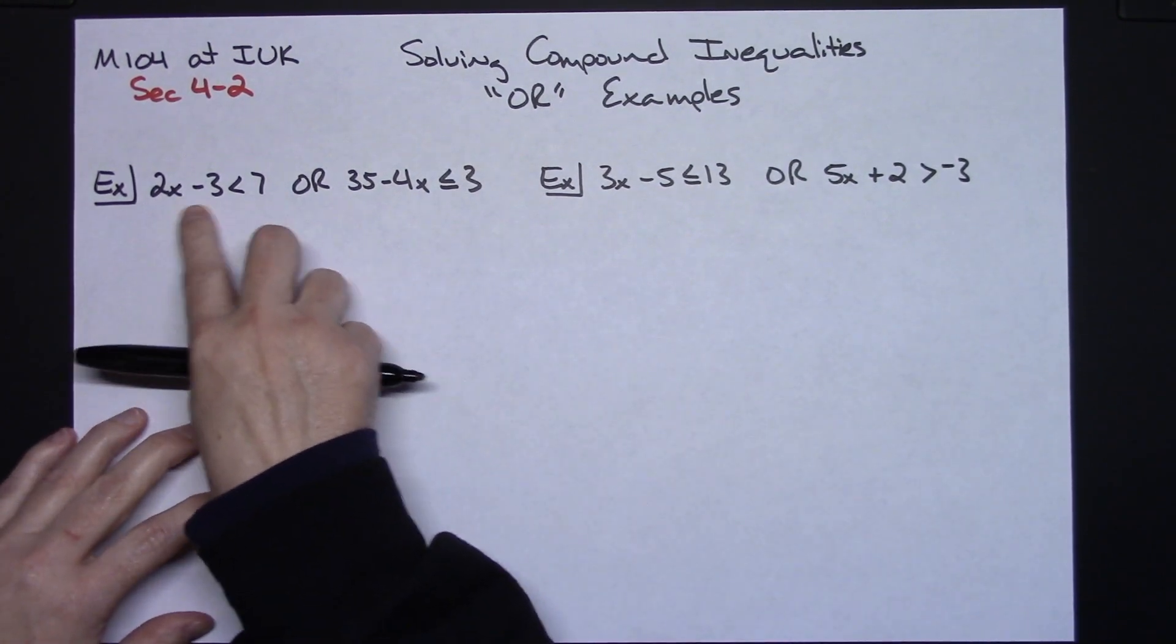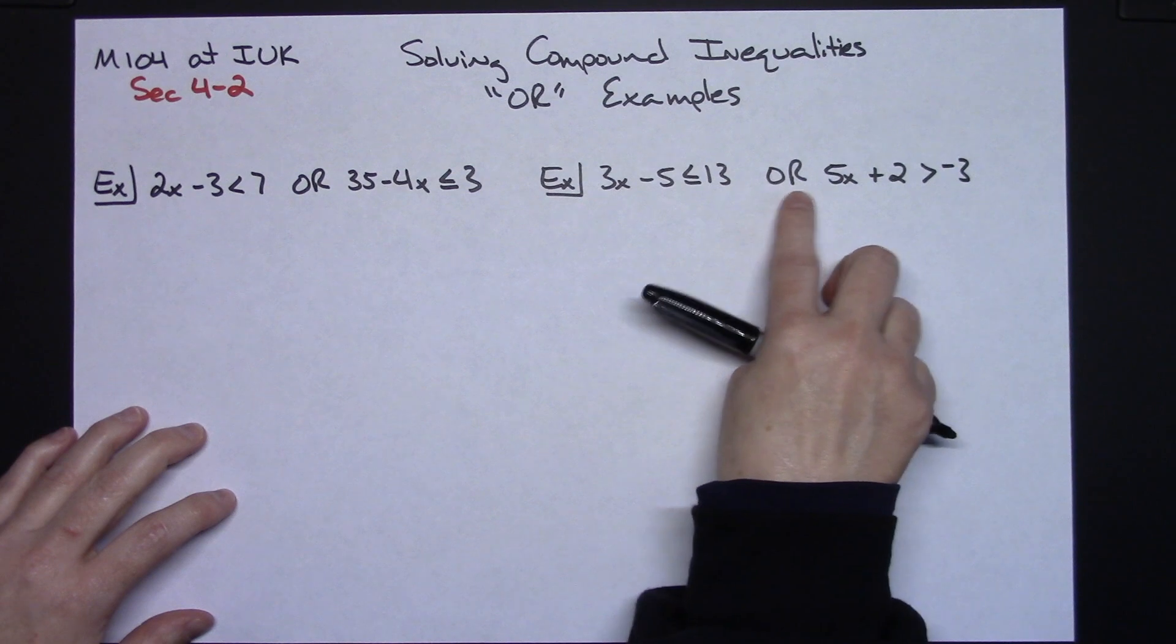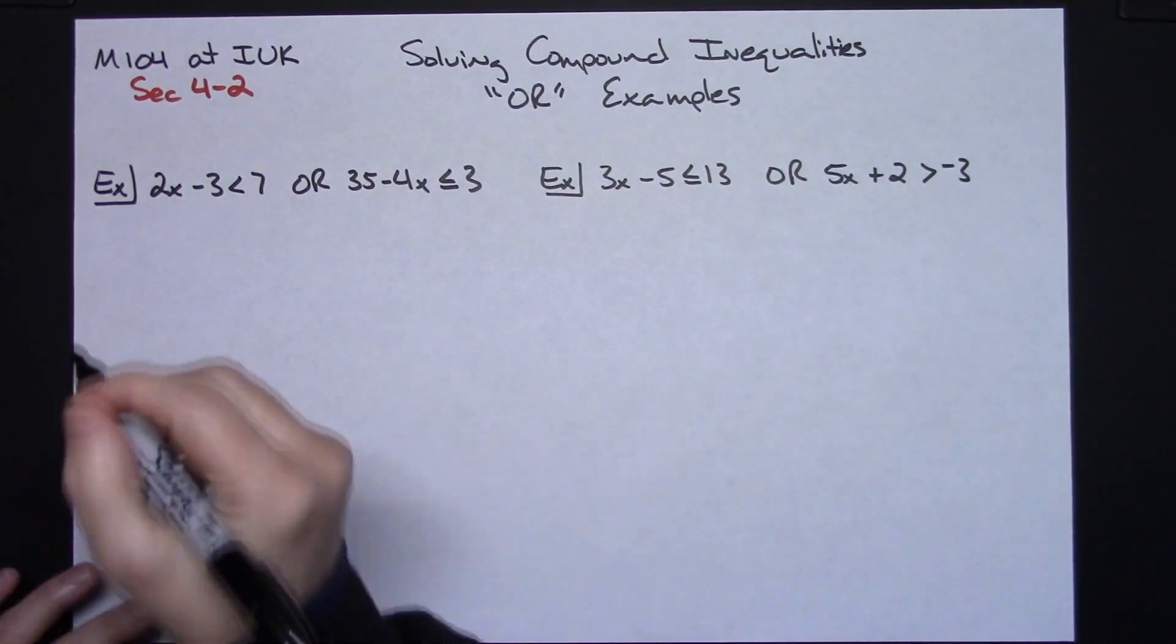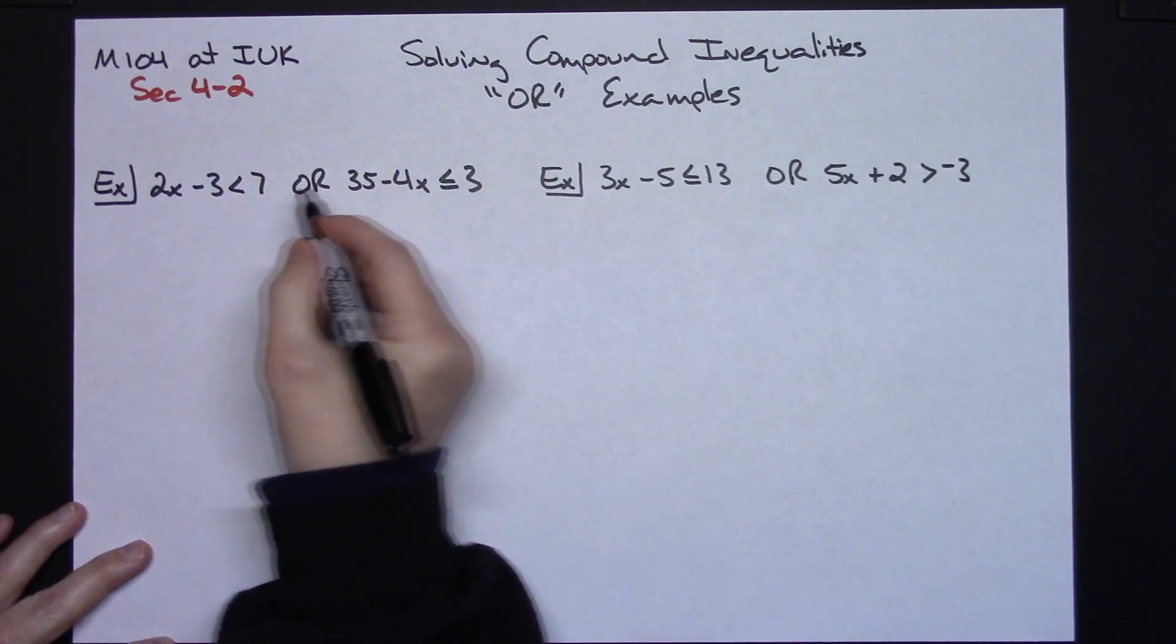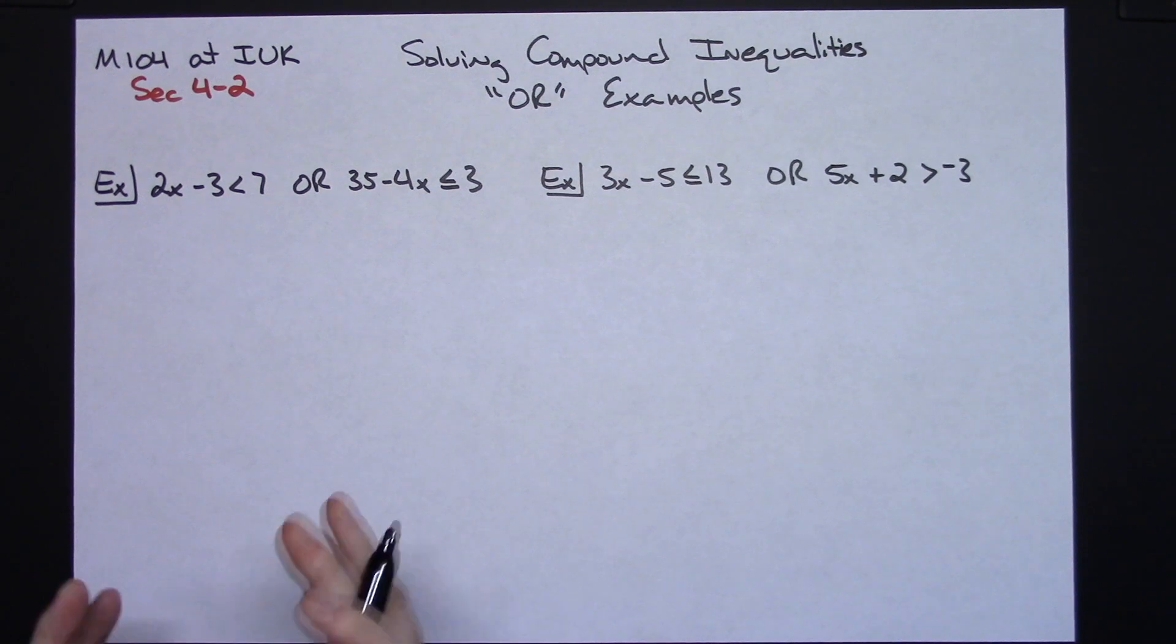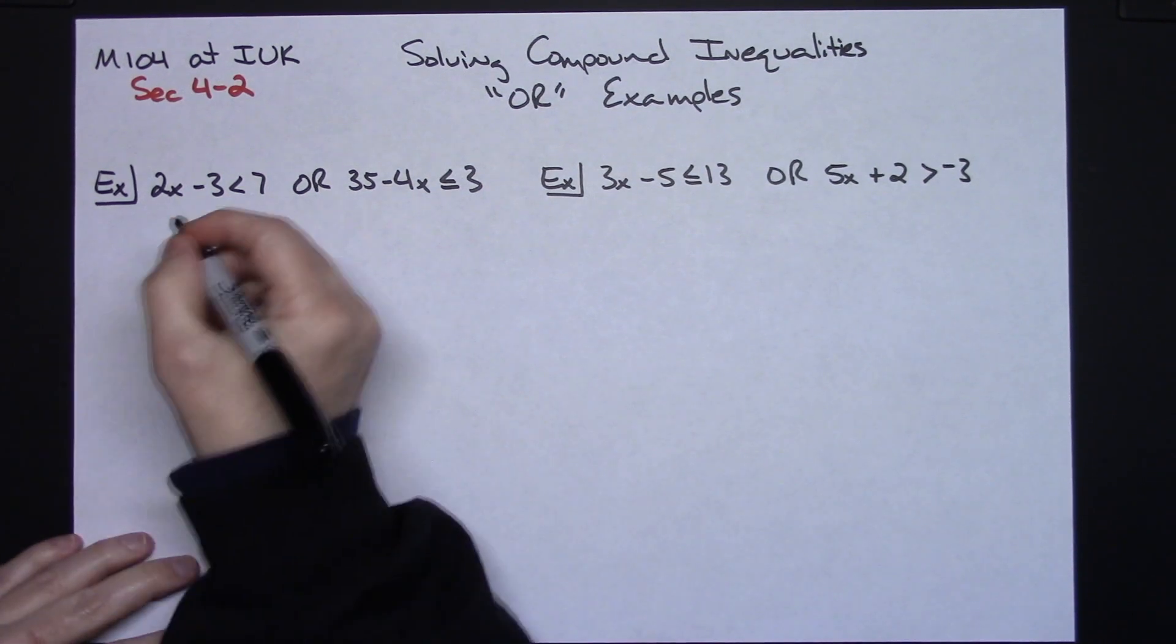You're going to be able to tell an OR inequality because it's going to have that word OR in there. You're going to get a couple inequalities. You'll have the word OR in between there. So for the most part these are probably just going to be two-step equations. They might have a little bit more to them, but for the most part pretty simple inequalities to solve.